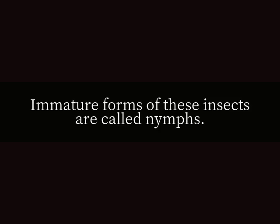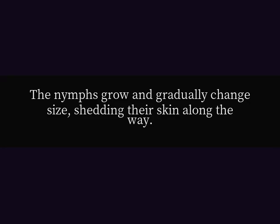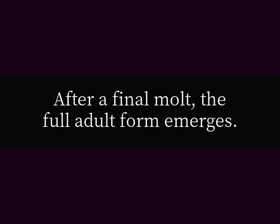Immature forms of these insects are called nymphs. The nymphs grow and gradually change size, shedding their skin along the way. After a final molt, the full adult form emerges.